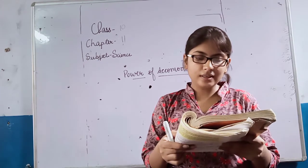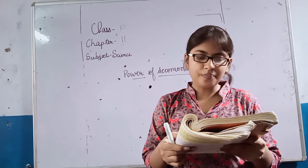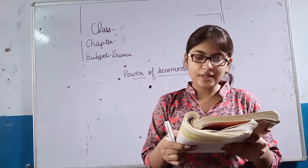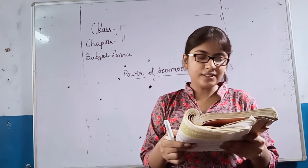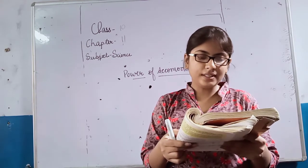When the muscles are relaxed, the lens becomes thin. Thus its focal length increases.